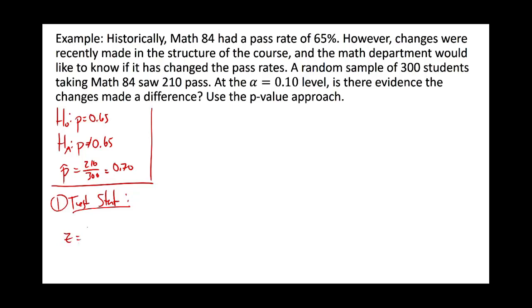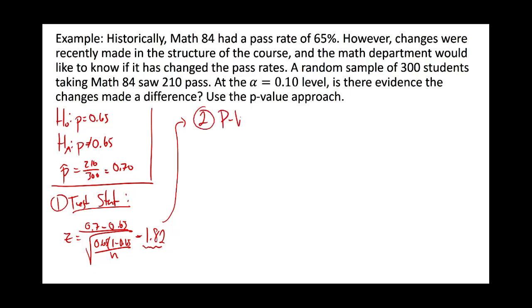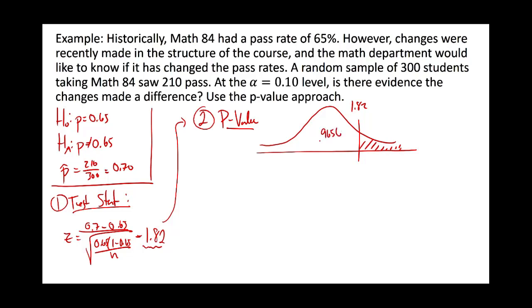In the p-value approach we don't need the critical value; we go straight to the test statistic, which is p-hat minus p₀ over the standard error. The test statistic was 1.82. Now we calculate the p-value: 1.82 is positive, so the p-value comes from the upper tail. Looking up 1.82 in the z-table gives 0.9656, so the tail probability is 1 minus 0.9656, which is 0.0344.